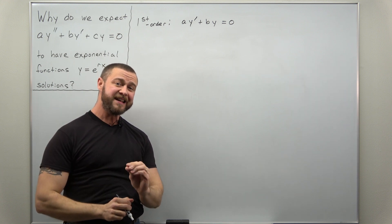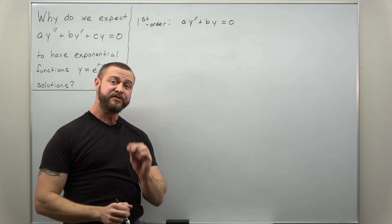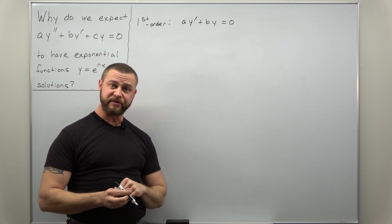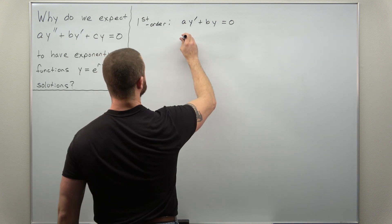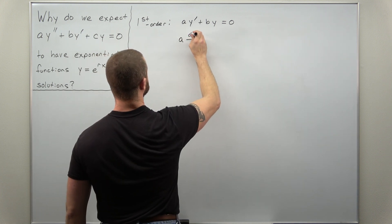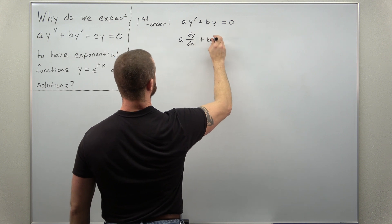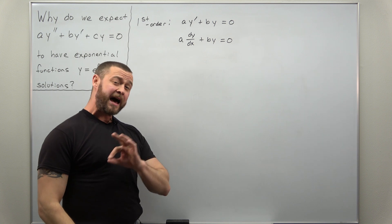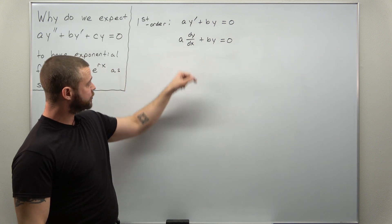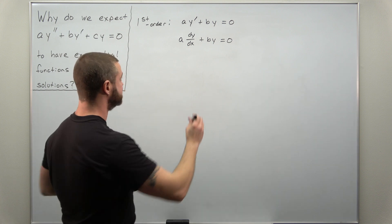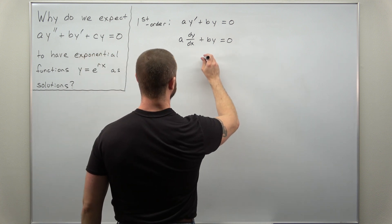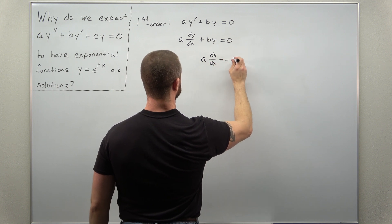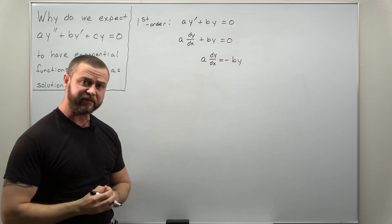And as it turns out, this is very easy to solve as a separable equation. So to start that, let me rewrite y prime as dy over dx. Alright, I always like to add or subtract before I split up the derivative. So let me subtract the by term to the right side. I get a times the derivative equals negative by.